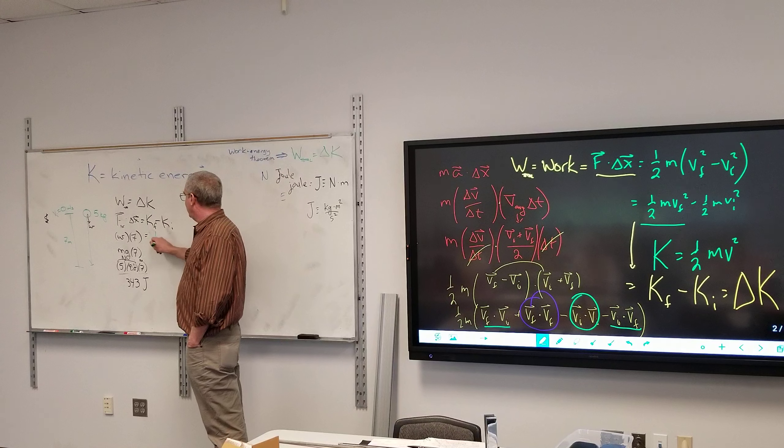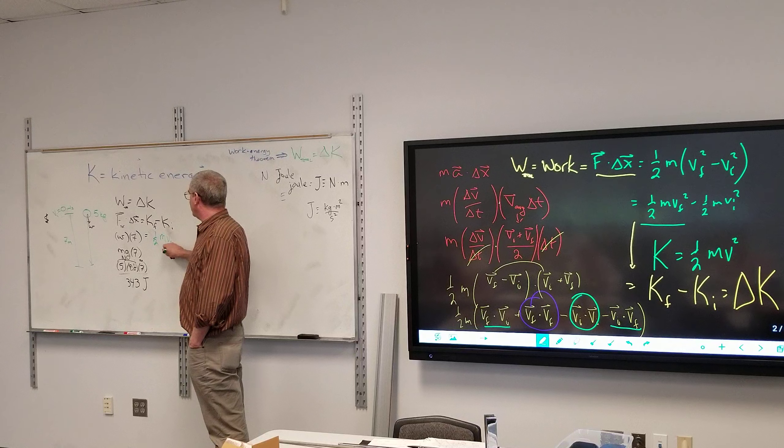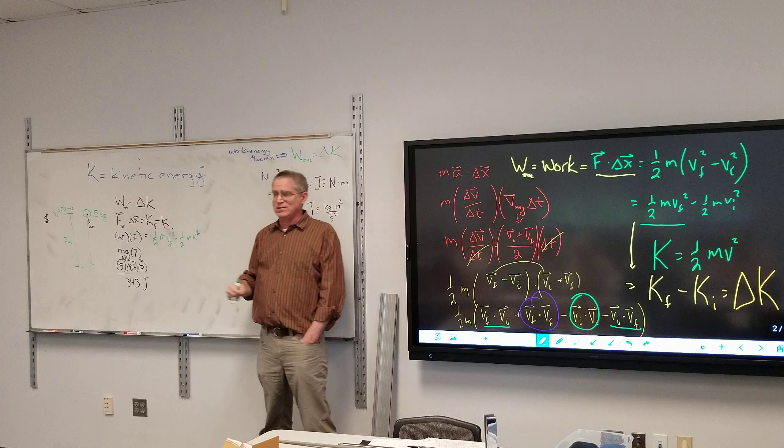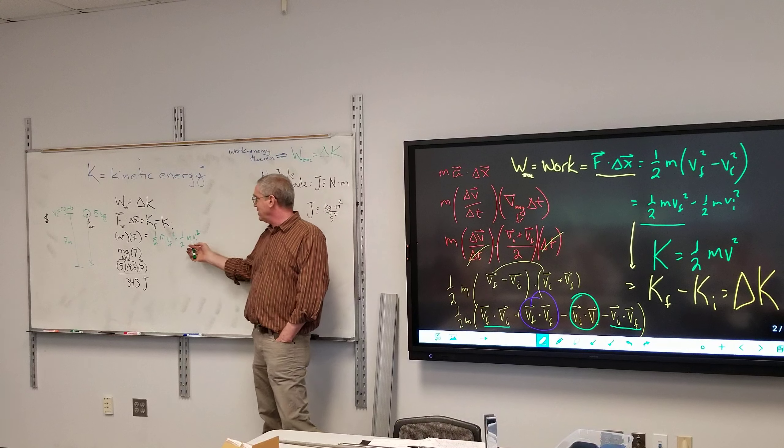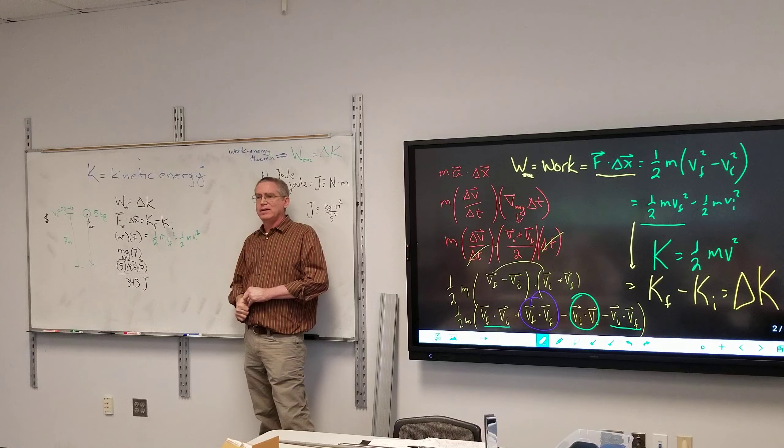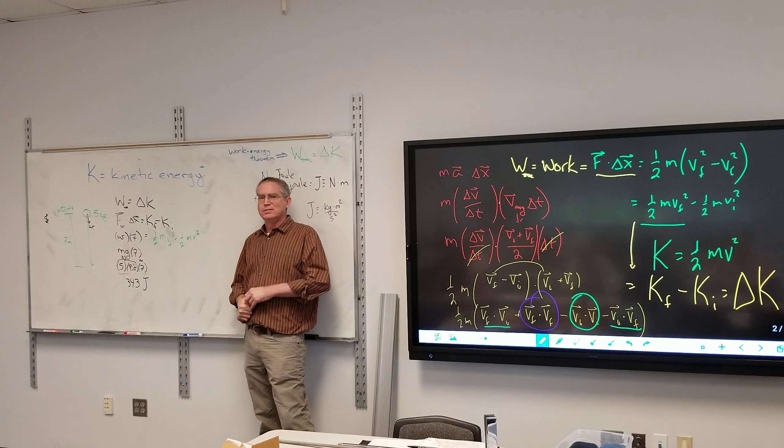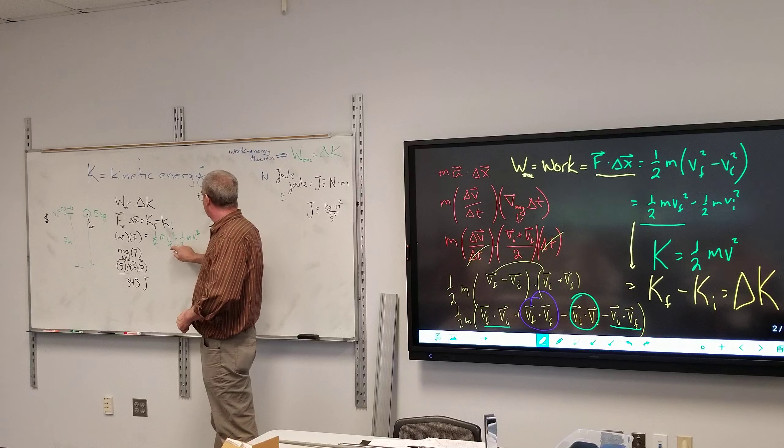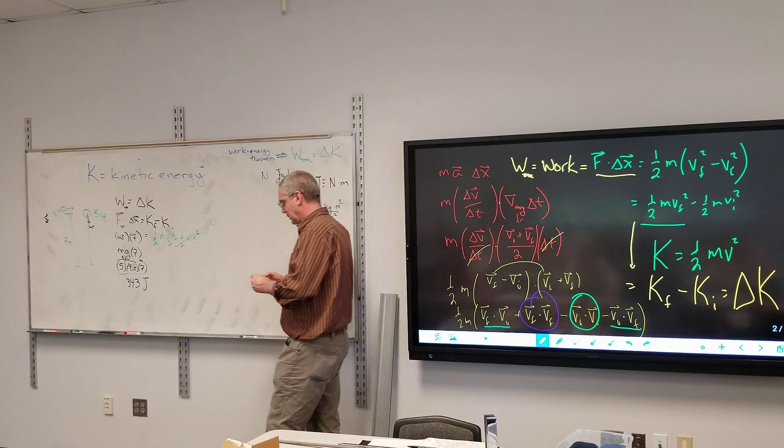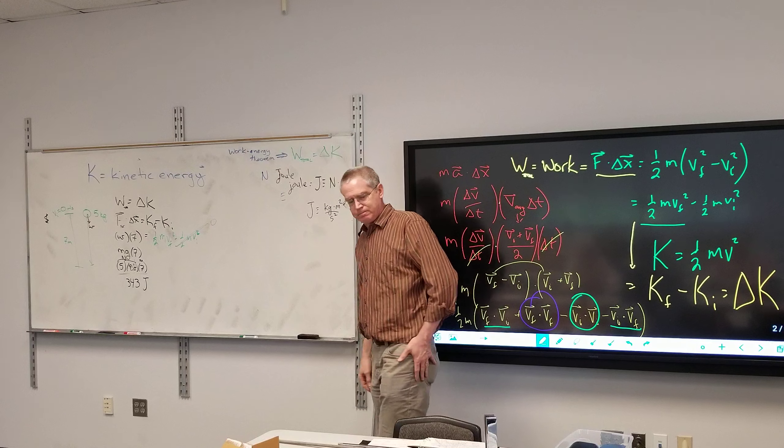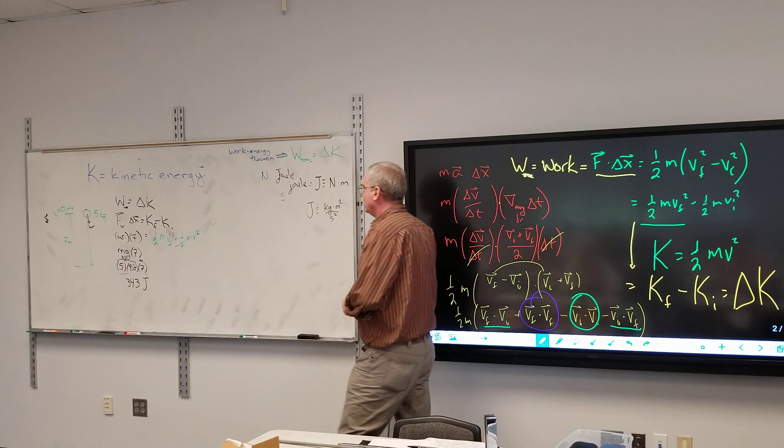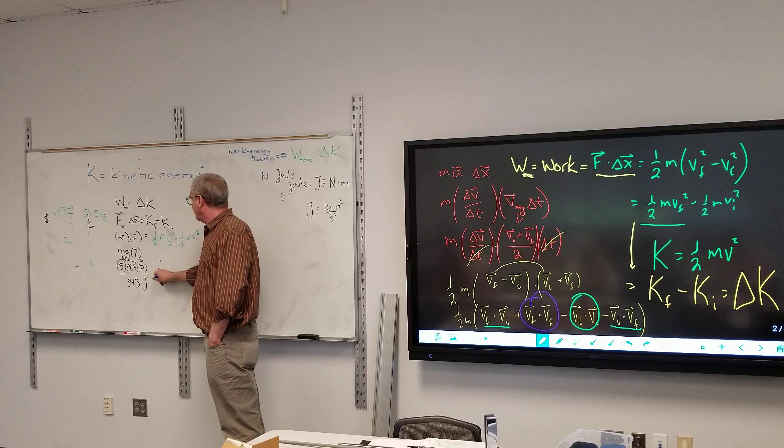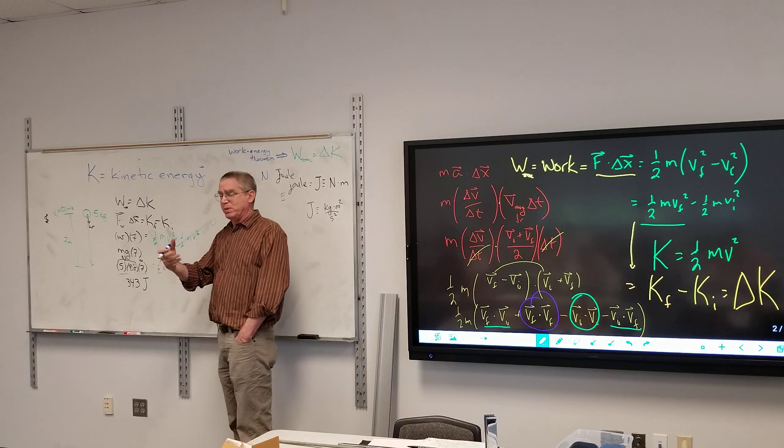I think the first time you did it it was much nicer, but you know, we'll get it. So I got one half mv final squared minus one half mv initial squared. Well since the initial speed is zero, what is the initial kinetic energy? Yeah. So I just have to figure out what that final speed is. So this would be equal to one half times five times whatever that final speed is.